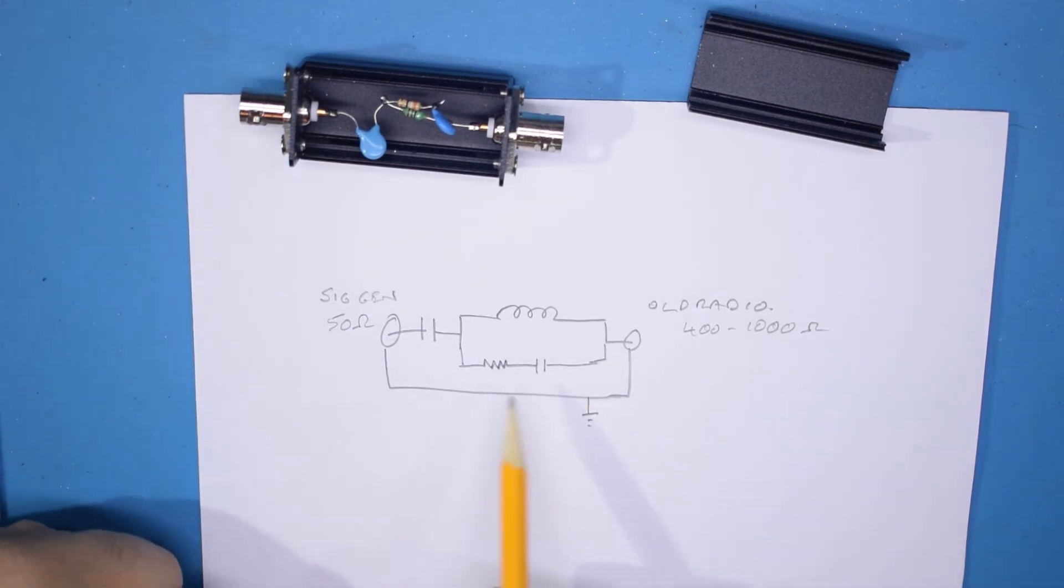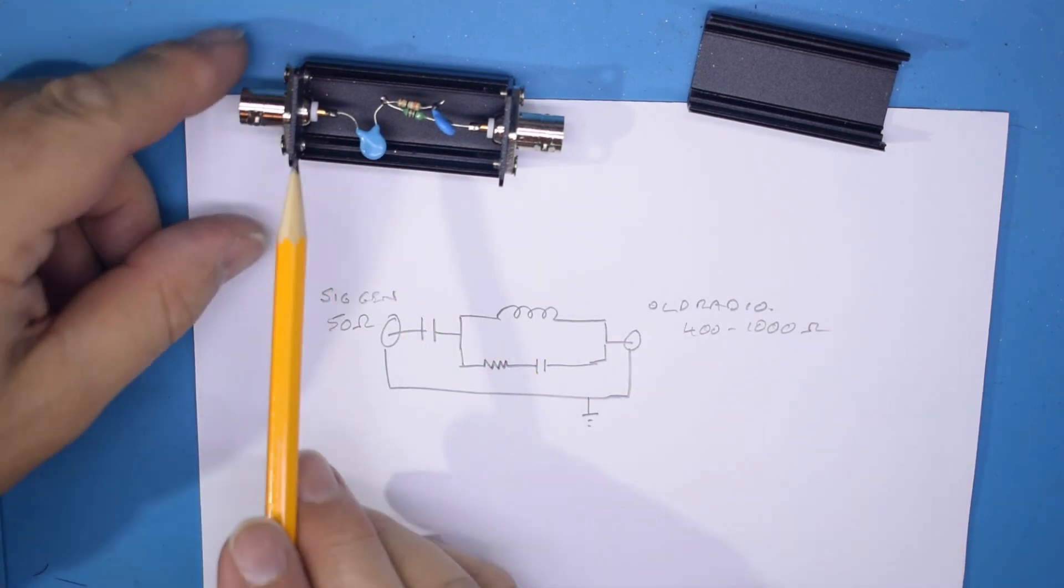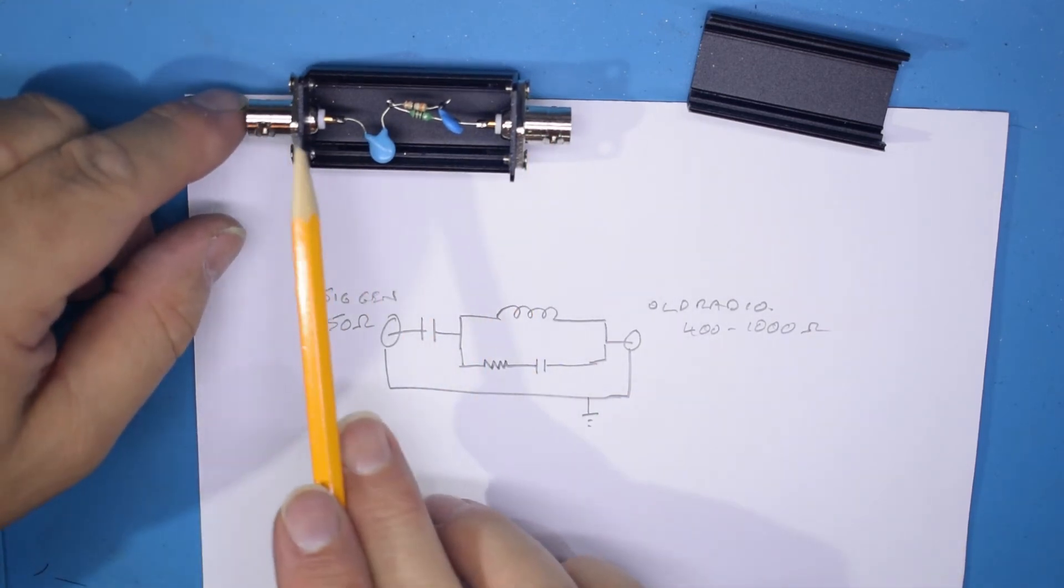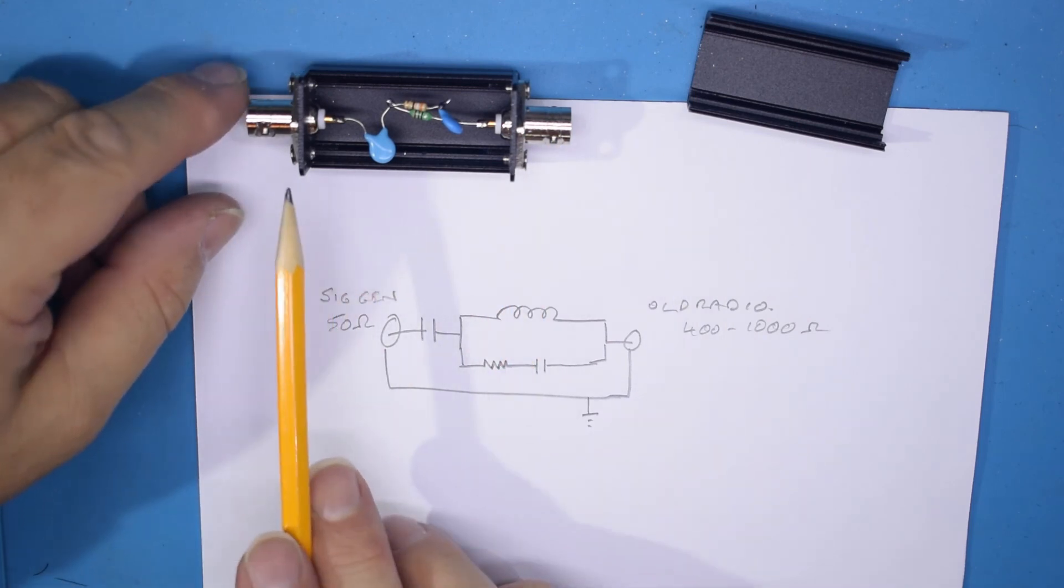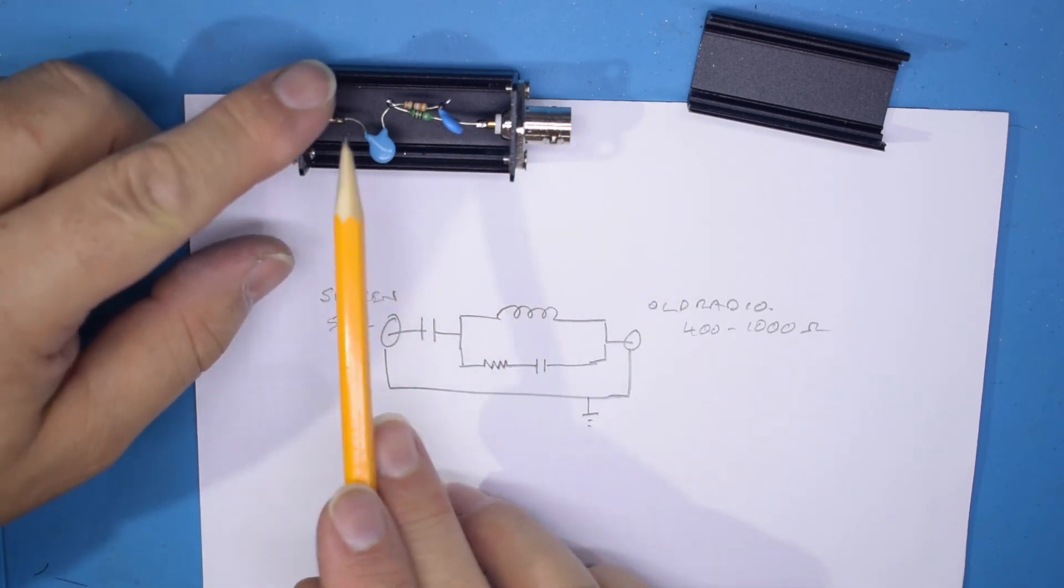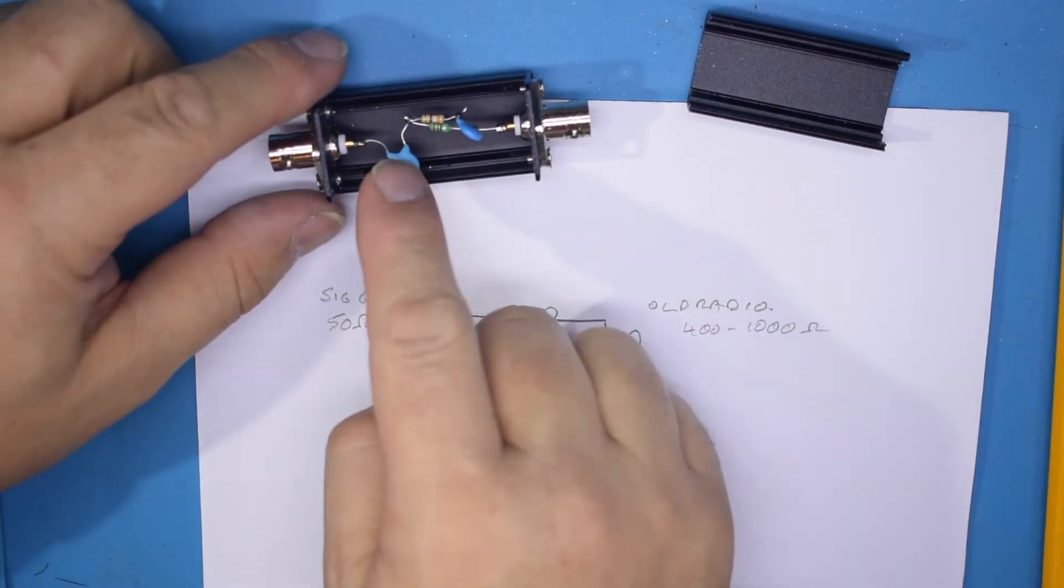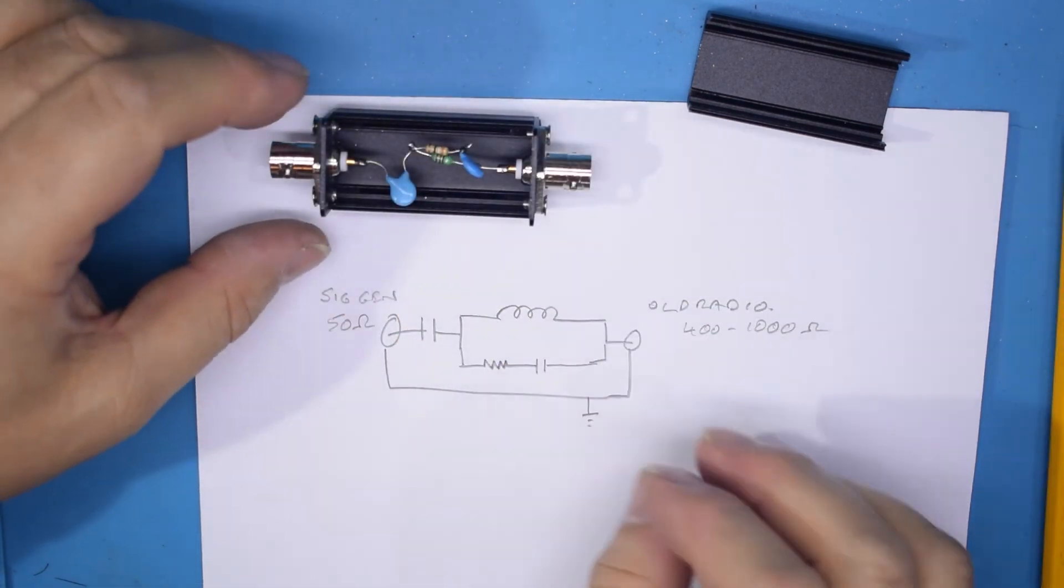You've got the metal box acting as the earth connection between the two, and it also provides the shielding of this circuit so that noise doesn't actually come in through the casing.